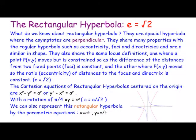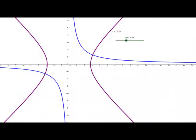Let's go into GeoGebra. You'll see there's x squared minus y squared equals 8, which is the purple hyperbola, and we are going to rotate that 45 degrees — it'll actually turn into xy equals 4.